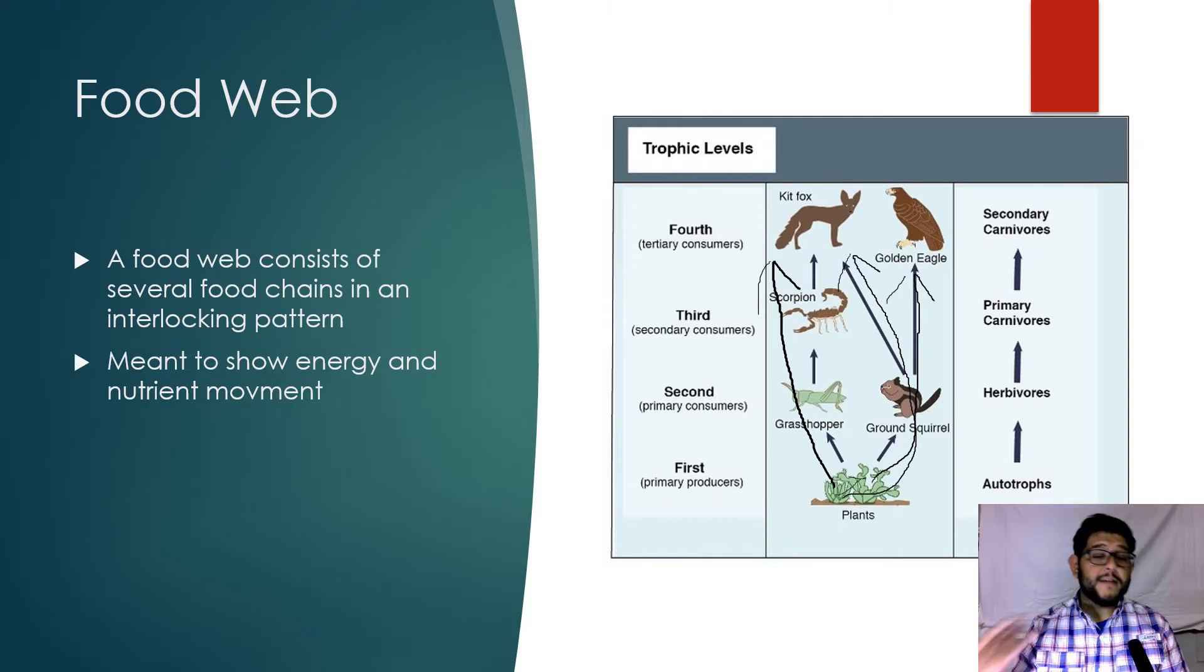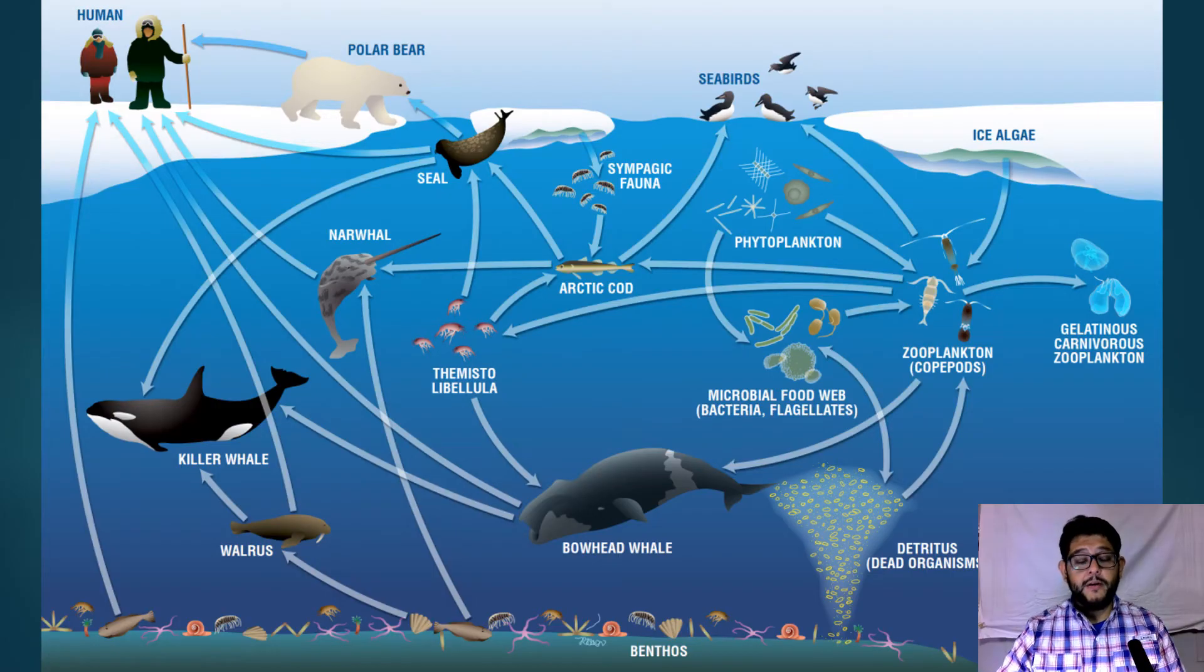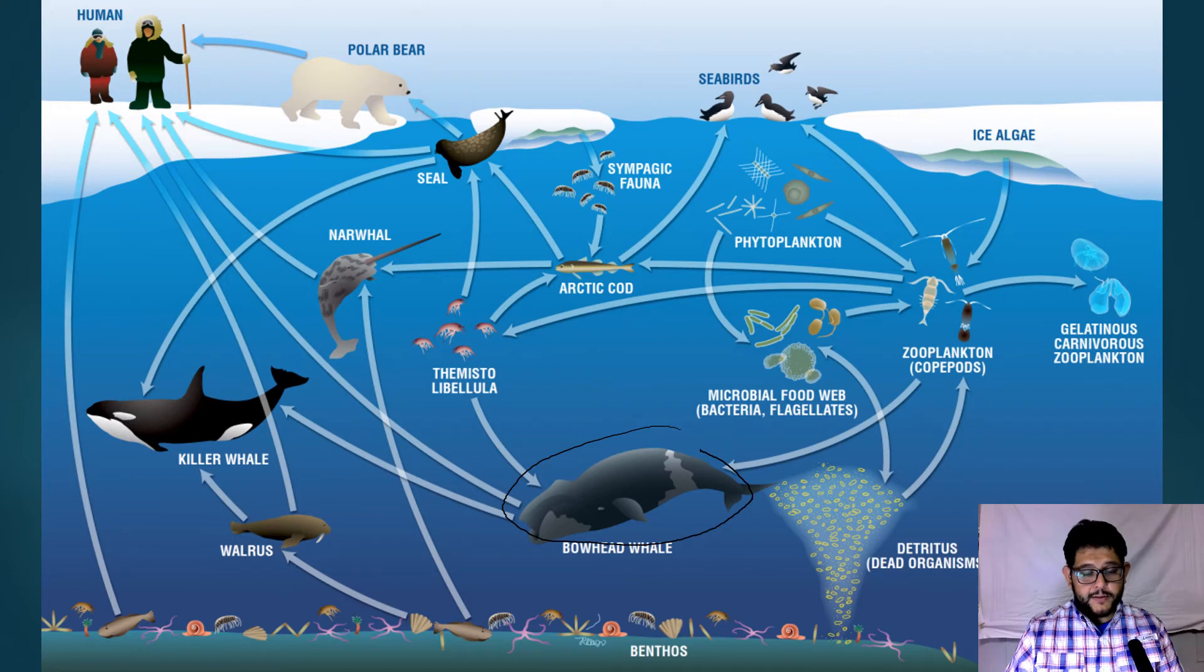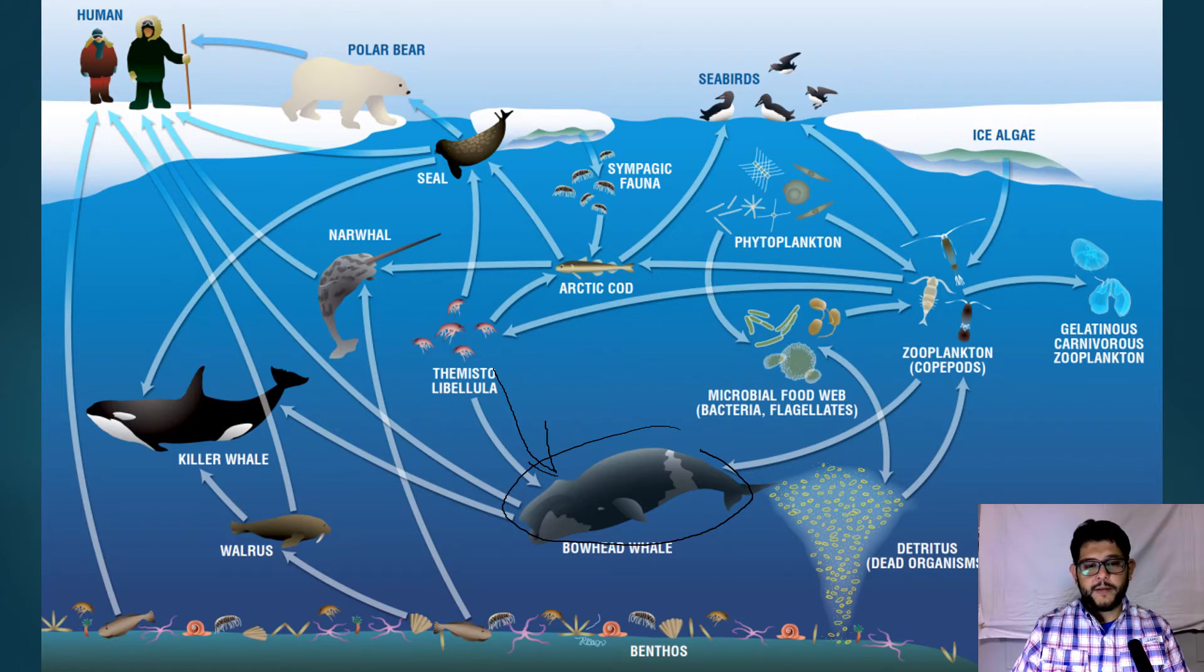This is a marine food web and as you can see there are things where the energy flow does go to them. Let's look at the bowhead whale right here. The bowhead whale has the mysticeti which is going to provide energy - that's what the whale eats - but the whale itself can also be eaten by the killer whale and by humans as well. We do play a part in these food chains and food webs.